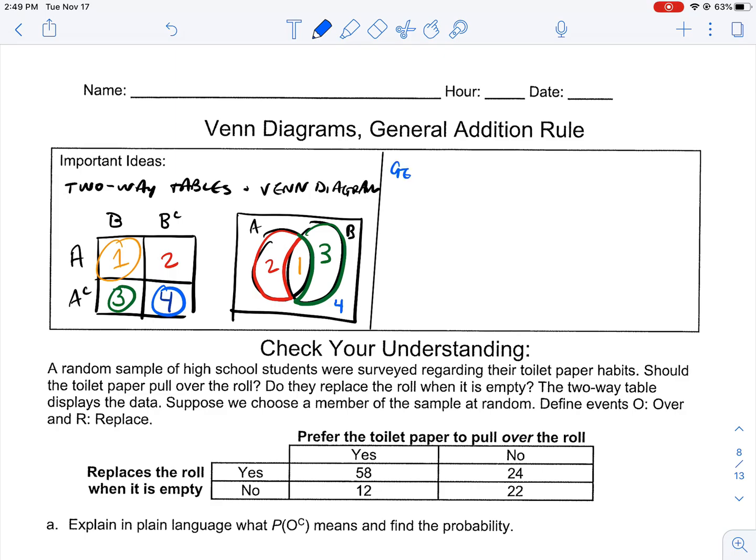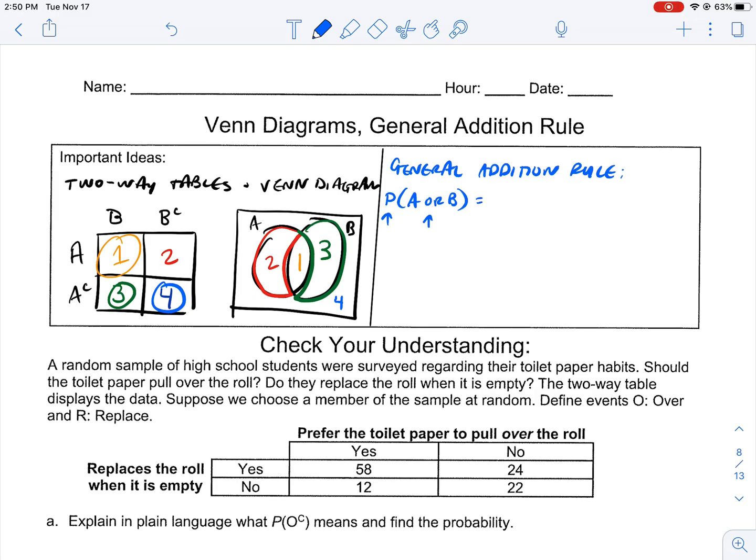The general addition rule goes like this. The probability of A or B happening is equal to the probability of A plus the probability of B, which makes sense. The probability of A happening or B happening would be the probability of A happening plus probability of B happening.